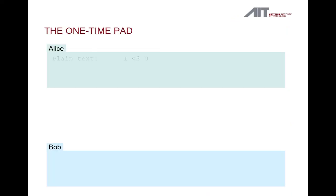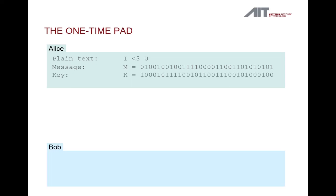Let's say Alice wants to transmit a romantic message to Bob, but she wants to be absolutely certain that no other person can read the message. First, she will translate her message into a binary string. Then she will take a random string of binaries that is just as long as the message itself. This shall be her encryption key.